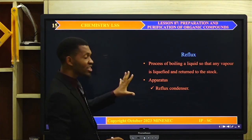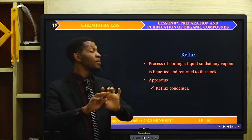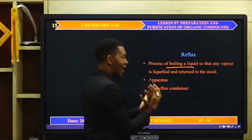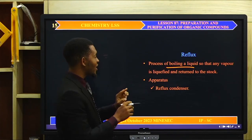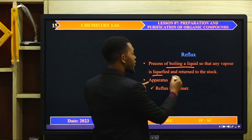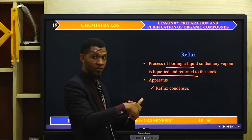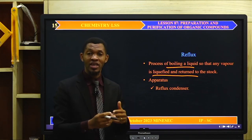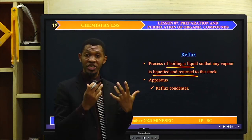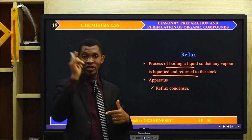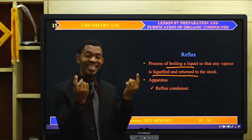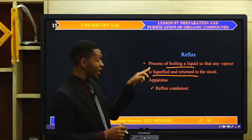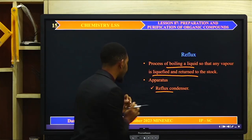What is reflux? Reflux is simply a process of boiling a liquid so that any vapor is liquefied and returned to the flask as liquid. The liquid boils and evaporates, but the vapor doesn't escape into the atmosphere — it is recondensed and sent back to the reaction mixture. The apparatus used to carry out reflux is known as a reflux condenser.